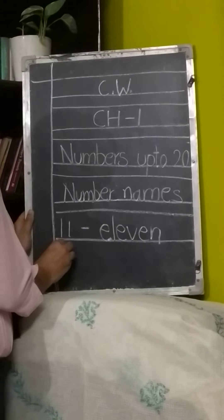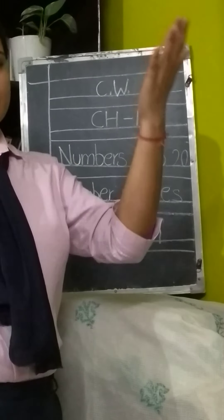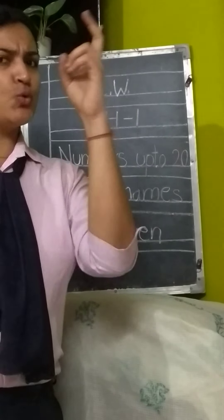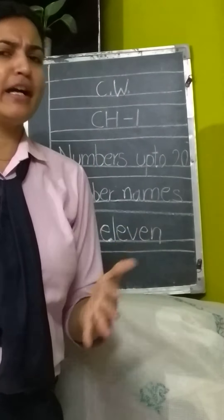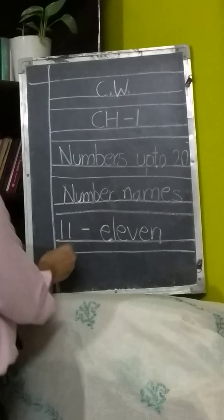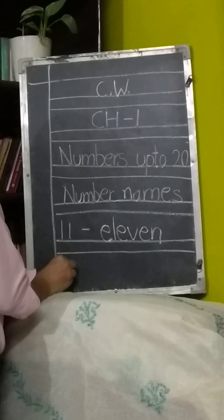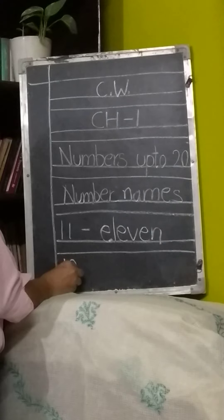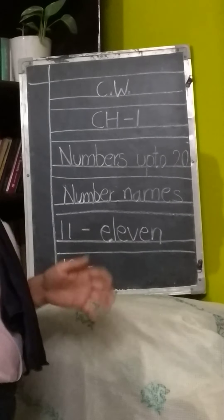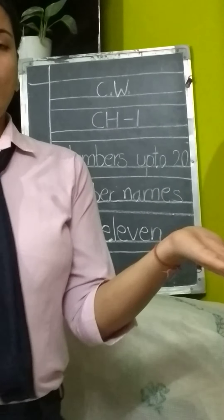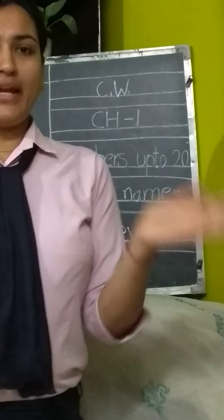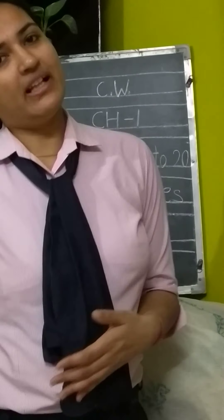Which number will come next? Tell me after 11. Start counting from 1: 1, 2, 3, 4, 5, 6, 7, 8, 9, 10, 11, 12. Yes! 12. After 11 comes 12. And its name is very simple: T-W-E-L-V-E.